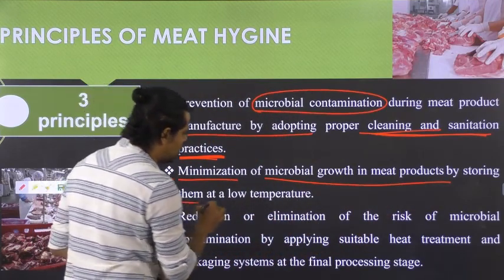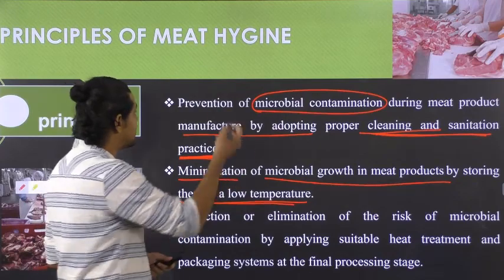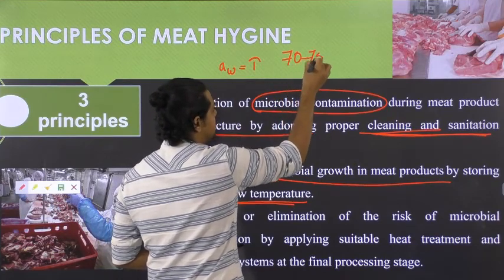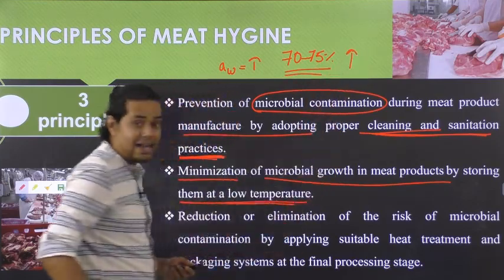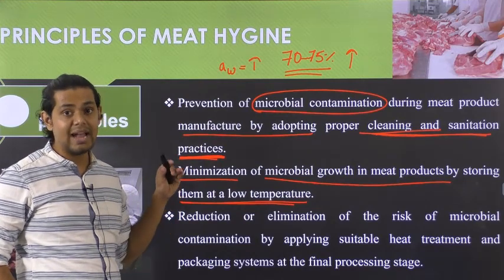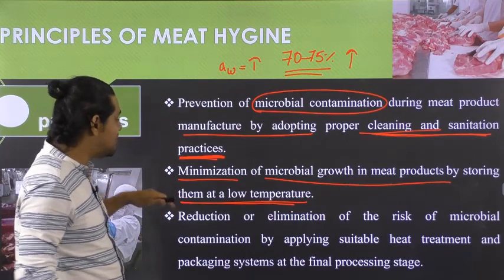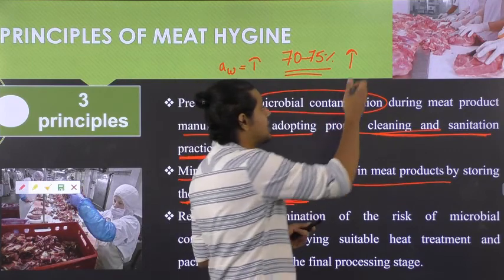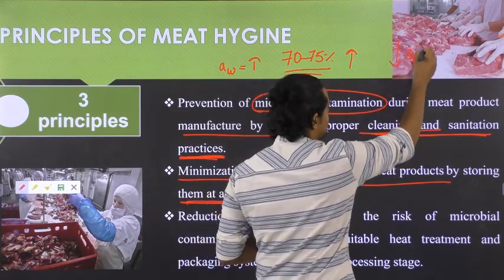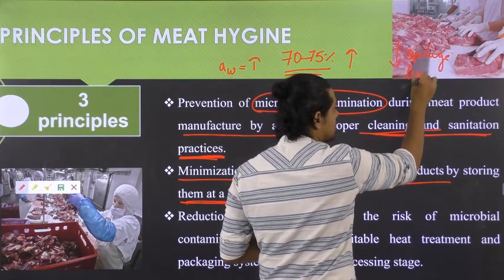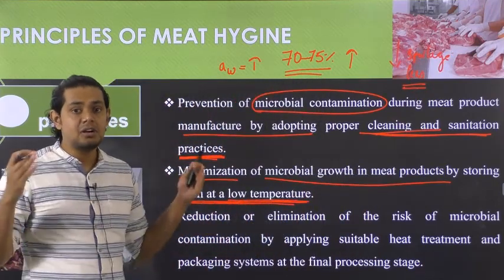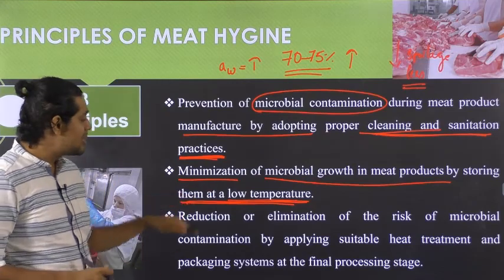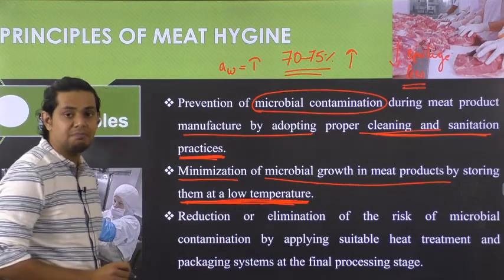The second principle is minimization of microbial growth in meat products by storing them at low temperature. Since the moisture content in meat ranges from 70 to 75 percent, water activity is extremely high, and microbial proliferation will be at the highest rate. By storing meat and meat products at low temperature, we ensure low incidence of spoilage, as cold temperatures prevent mesophilic, thermophilic, and thermoduric microorganisms from growing and producing undesirable changes.